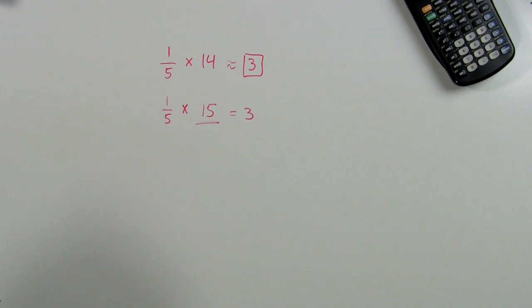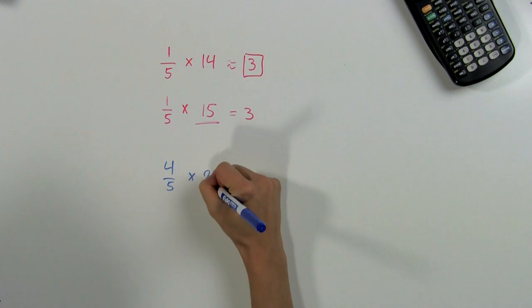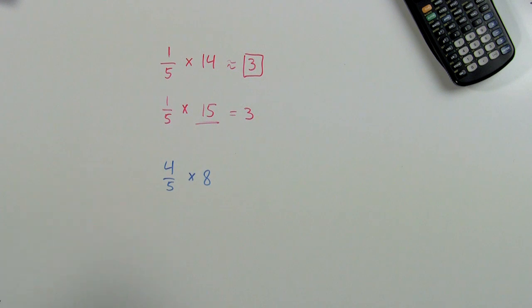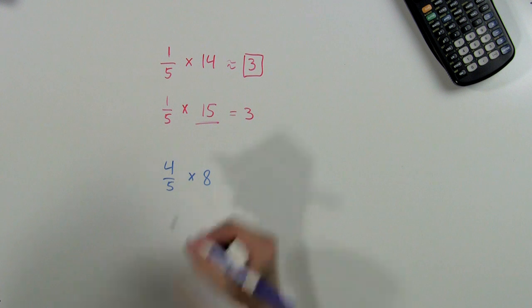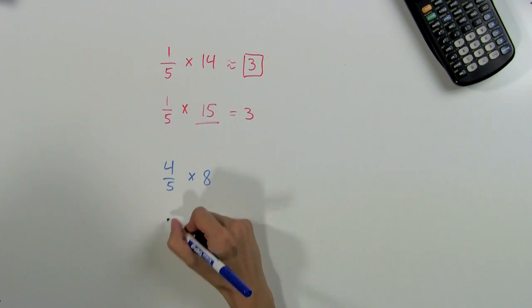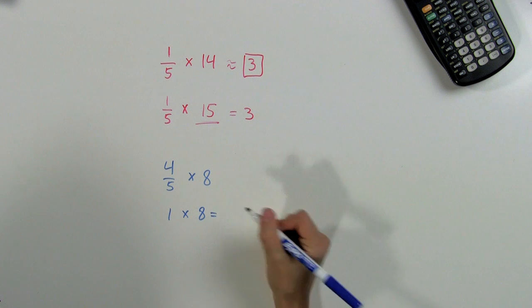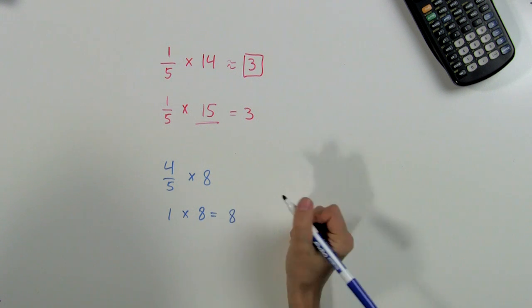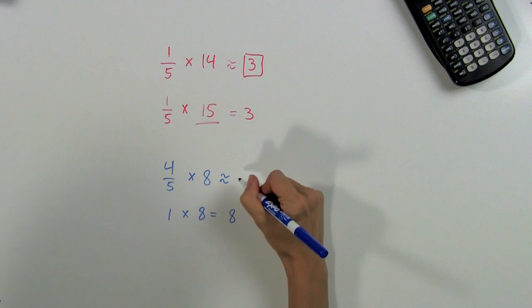Now let's try estimating 4/5 times 8. We could multiply 4/5 times 8, or we can look for compatible numbers again. In this case, we know that 4/5 is very close to 1, so we can write this as 1 times 8. 1 times 8 is exactly 8, so that tells us that 4/5 times 8 is approximately 8.